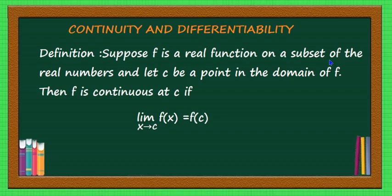The definition: suppose f is a real function on a subset of the real numbers, and let c be a point in the domain of f. Then f is continuous at c if the limit as x tends to c of f(x) is equal to f(c). This means the left-hand limit and right-hand limit of the function — limit as x tends to c⁺ of f(x) equals limit as x tends to c⁻ of f(x) equals f(c).